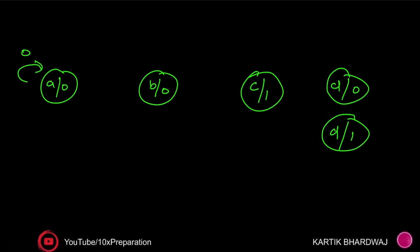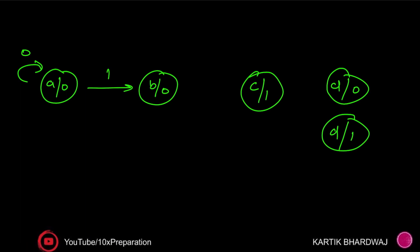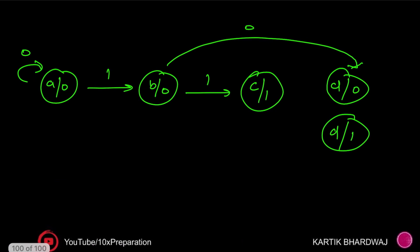Coming back to state A: if input is zero it is retained at A; output is inside the state box for Moore. If one is coming, move to state B. At state B: if zero is coming it goes to D-zero; if one is coming it moves to state C. At state C: if one is there it stays at C. If zero is coming, output is one and it moves to D-one.